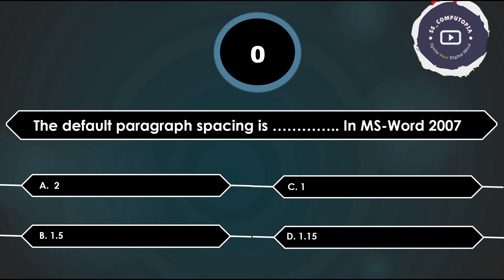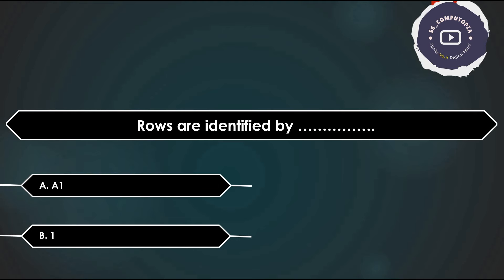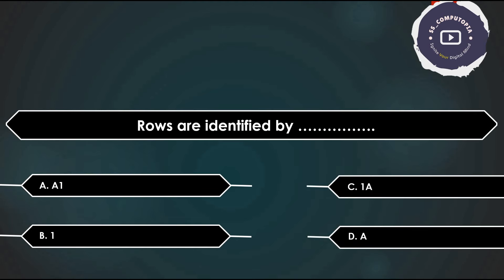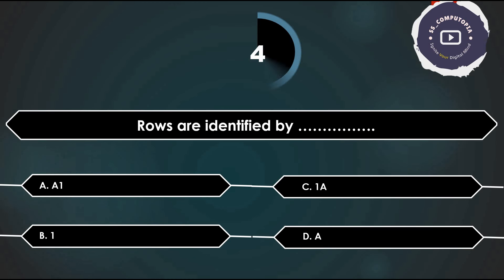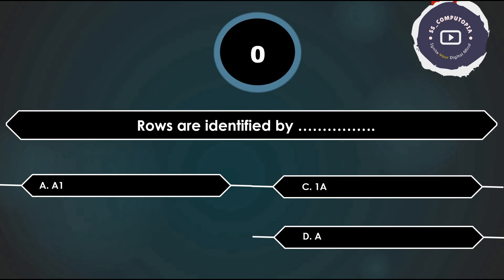Next question: rows are identified by — E1, 1, 1A, or A? Answer is 1. Rows are identified by numbers.